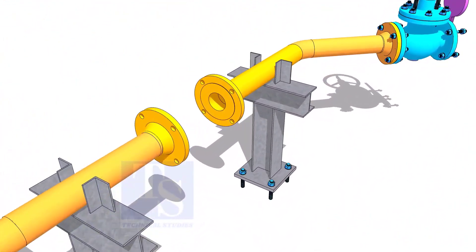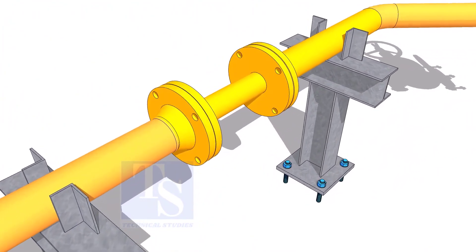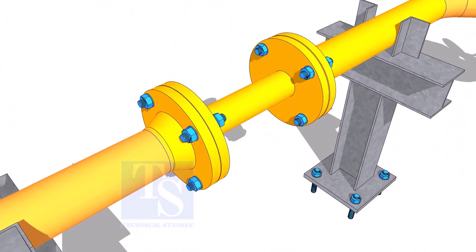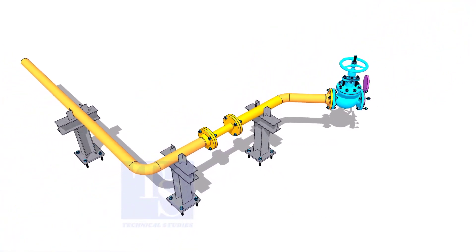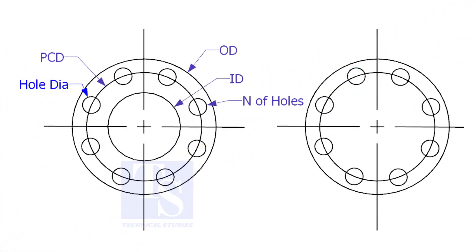Other use of plate flange is making temporary spools to replace valves and equipment on a piping system. There are two types of plate flanges: open and blind.